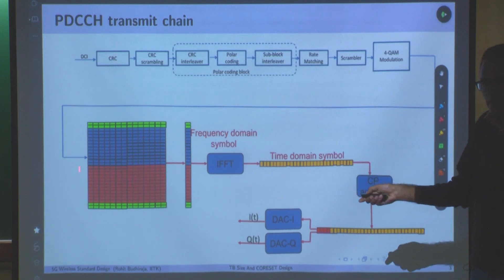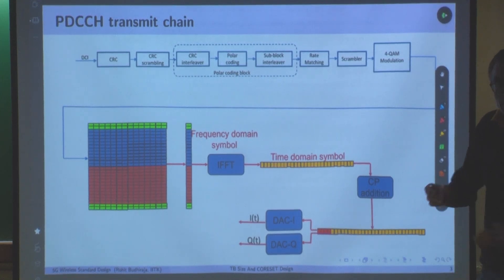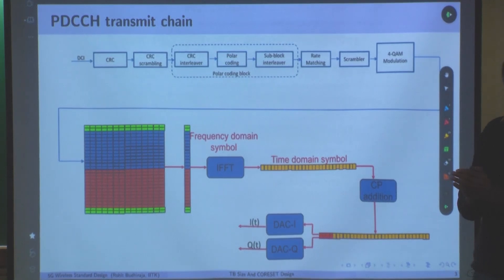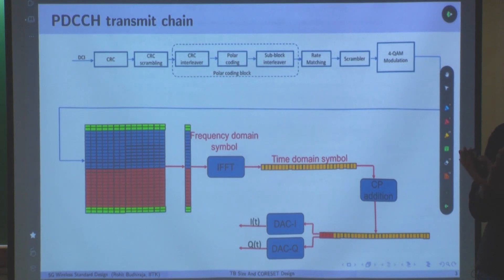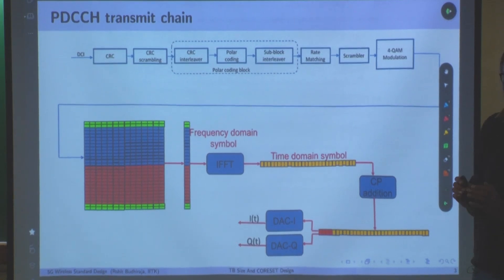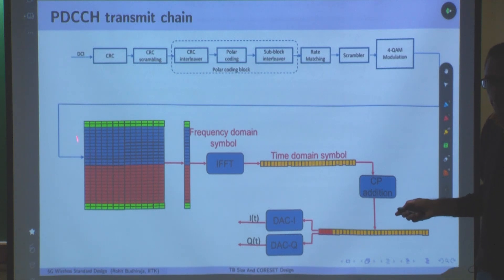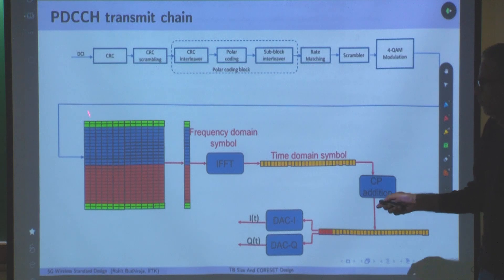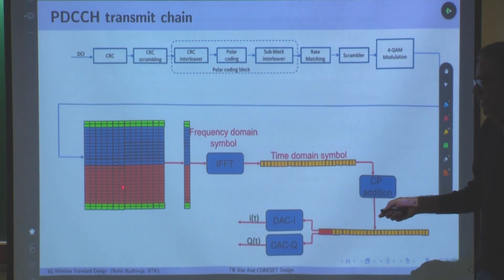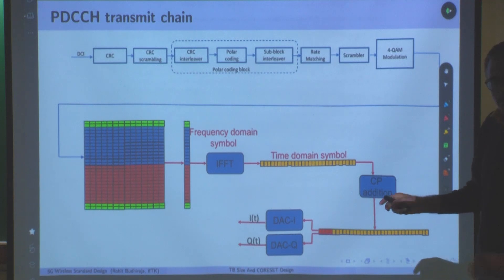Somewhere data will be mapped and somewhere PDCCH will be mapped. PDCCH is mapped onto the CORESET — the control resource set. We saw some pictures of this in the beginning. We will revisit those pictures and understand how these CORESETs are designed. Most of the time they appear at the beginning of the slot, though they might also come in the middle. They are mapped onto this 2-dimensional grid, and PDCCH can come along with data or in advance.